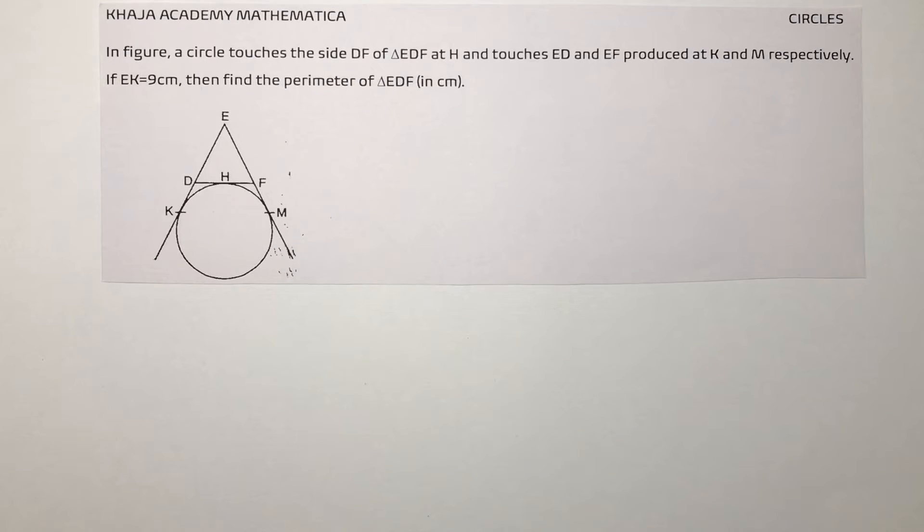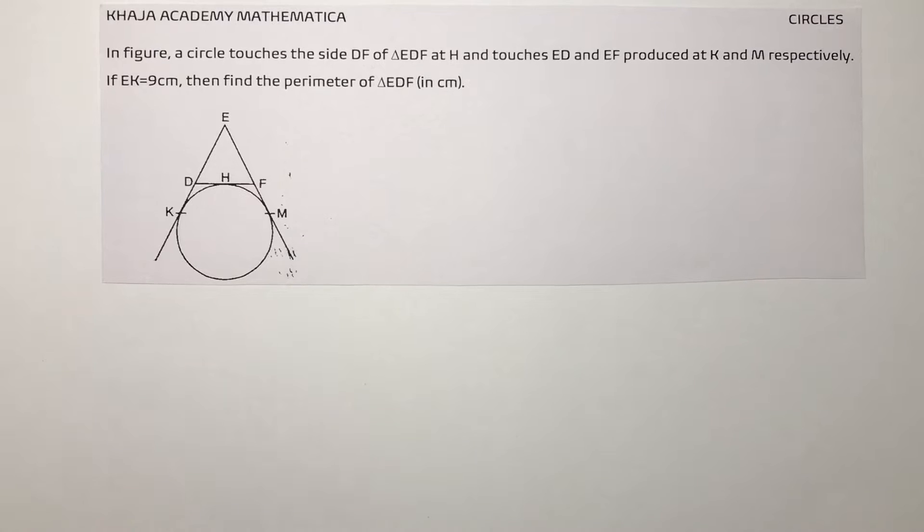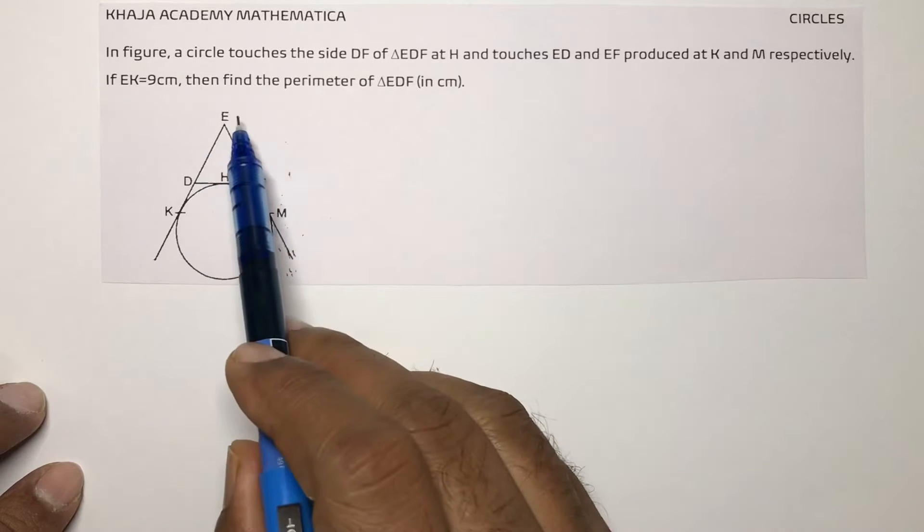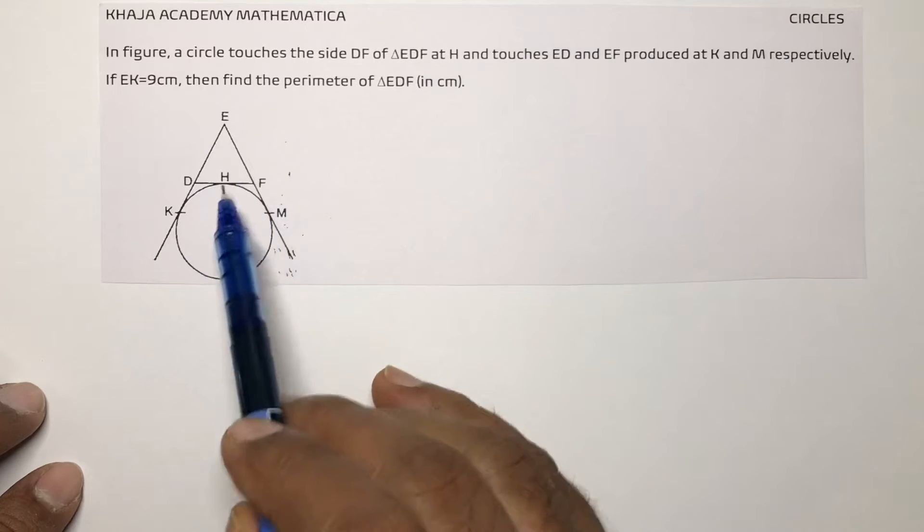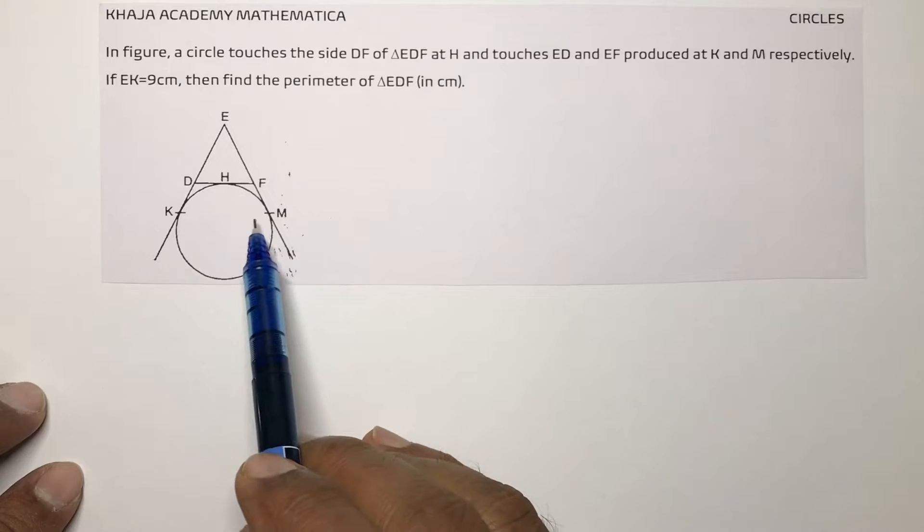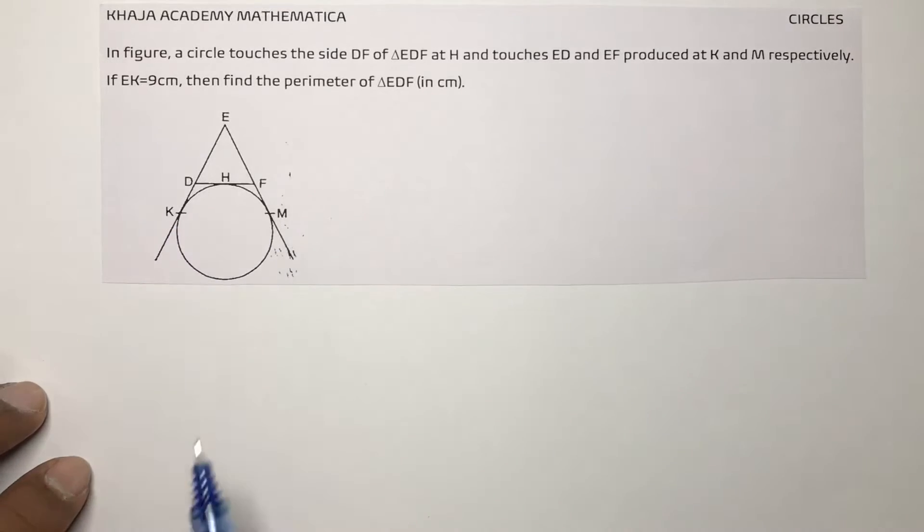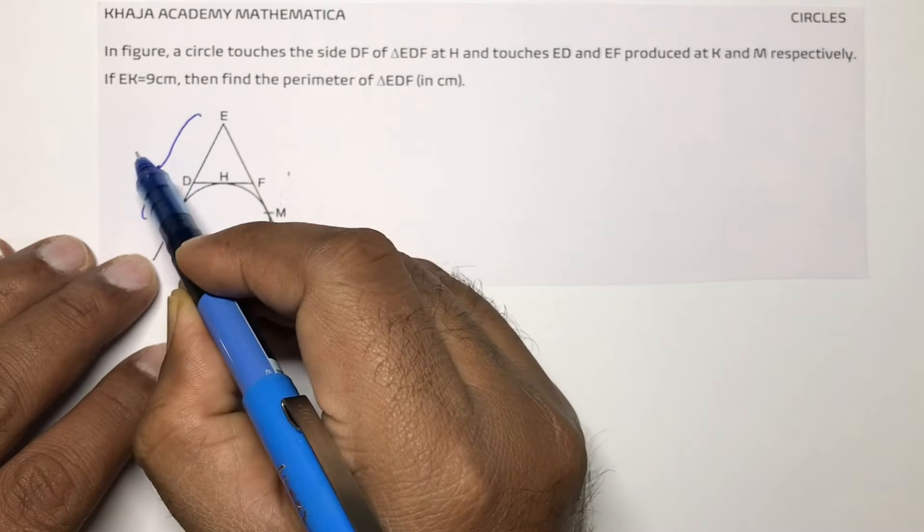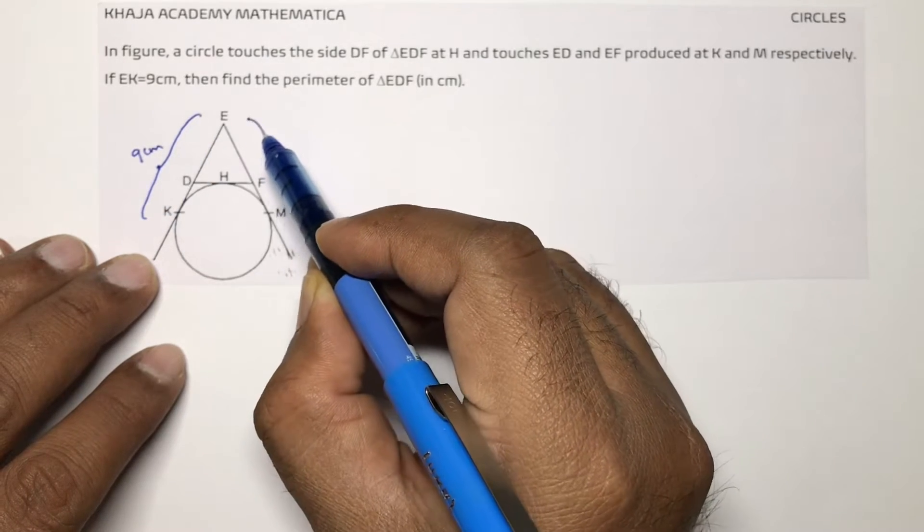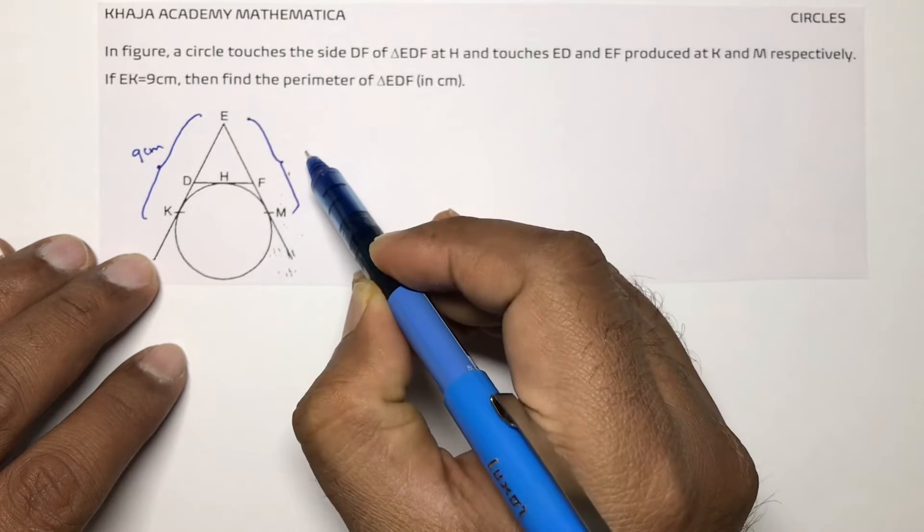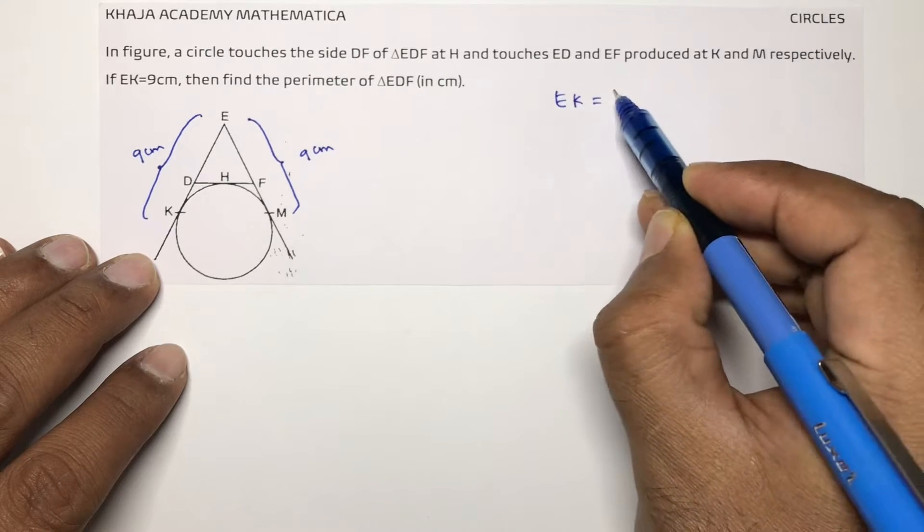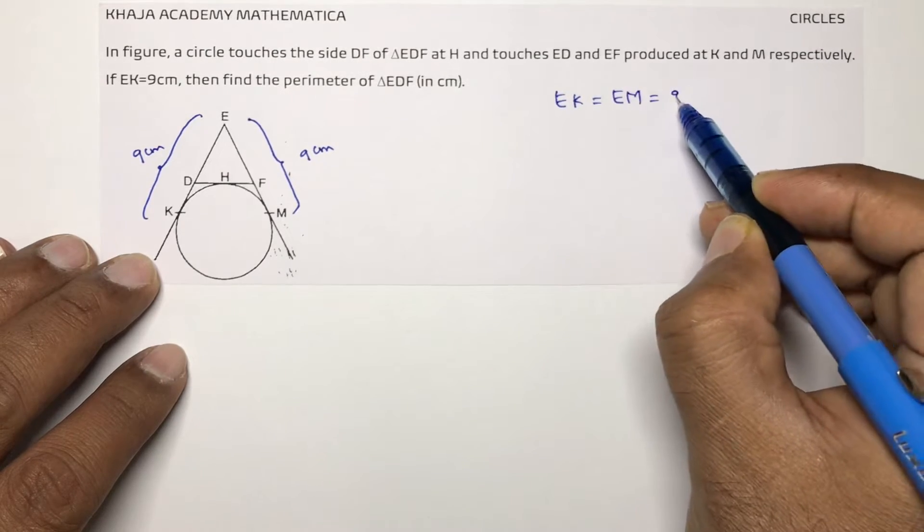In the figure, a circle touches the side DF of triangle EDF at H and touches ED and EF produced at K and M respectively. So if this total is 9 cm, if EK is 9 then EM also will be 9 cm because EK equals EM equals 9 cm.